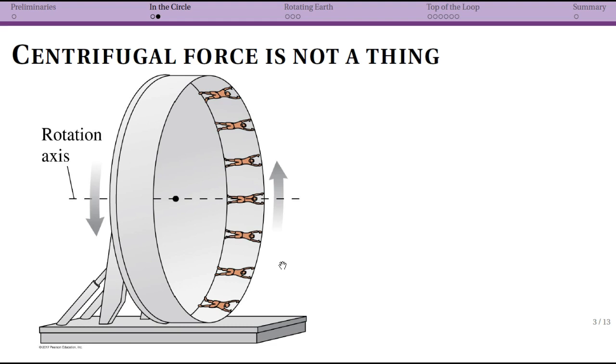If we think about this person, the free body diagram we would draw here is that you have a normal force pushing on them towards more or less the center of the circle and you have the gravitational force. I've used a different color since they're kind of on top of one another. And that's it.